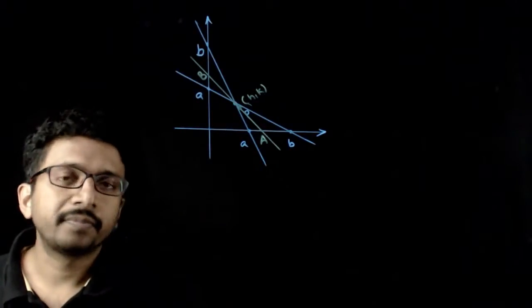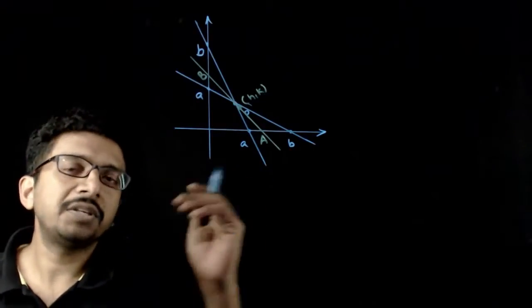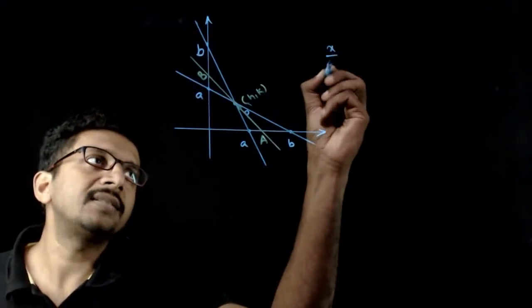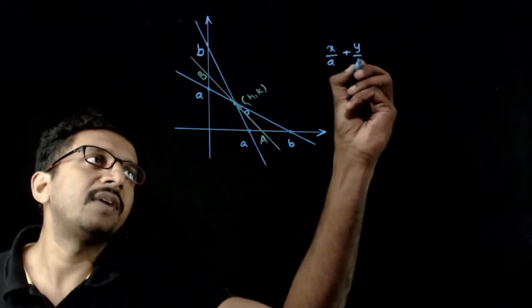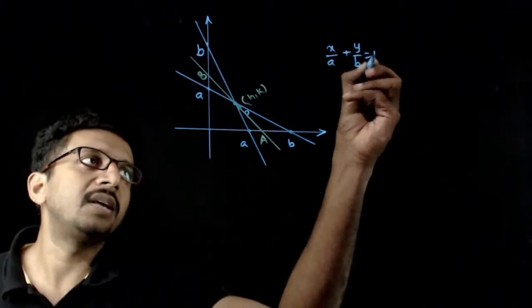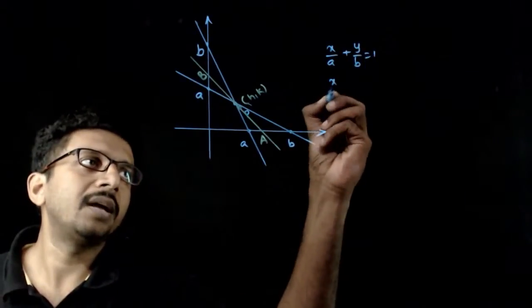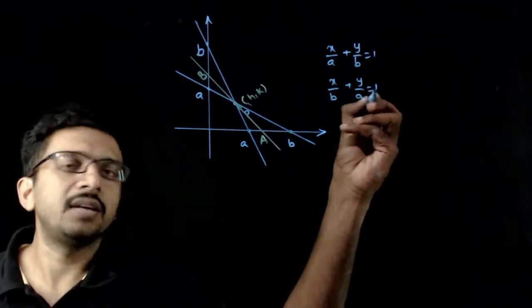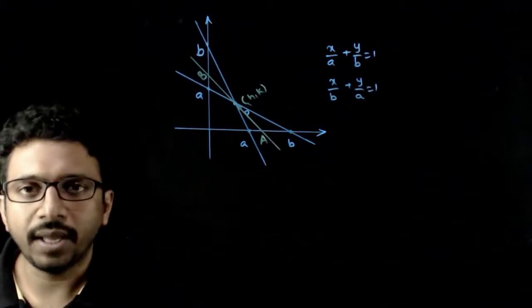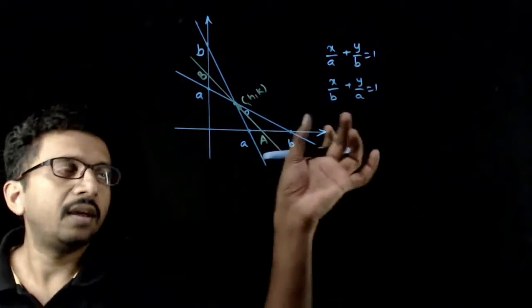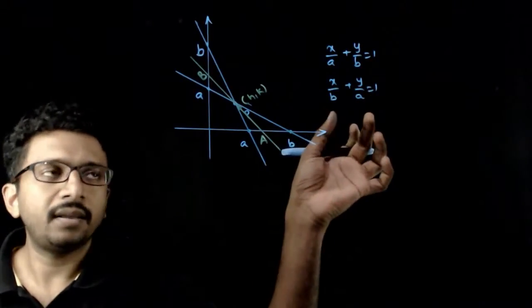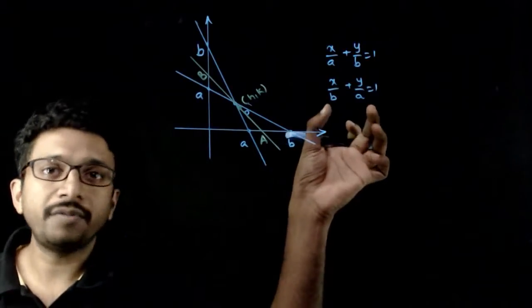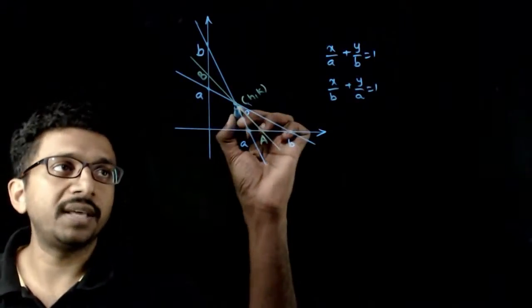Welcome students. In this question, you have given two lines: x/a + y/b = 1 and x/b + y/a = 1. You have two lines and a variable line is passing through the point of intersection of these two lines.